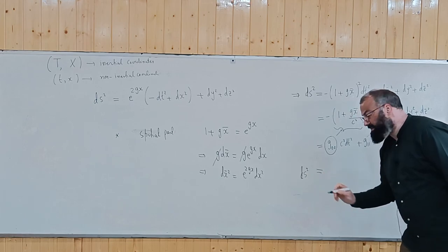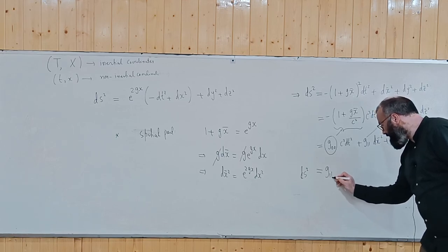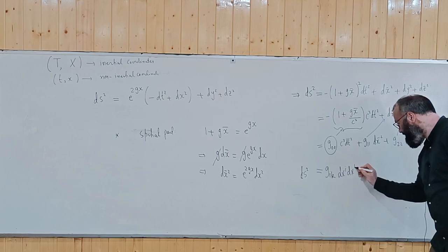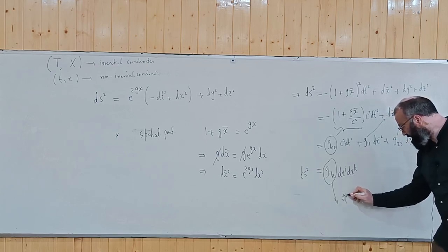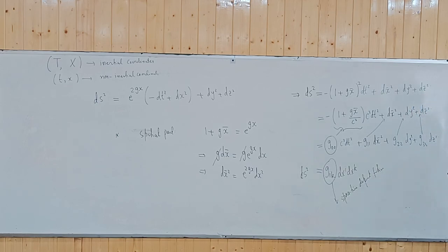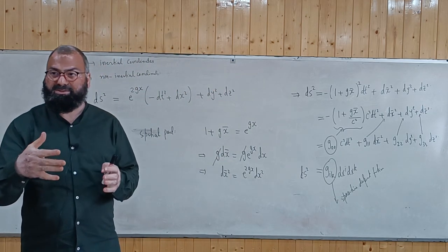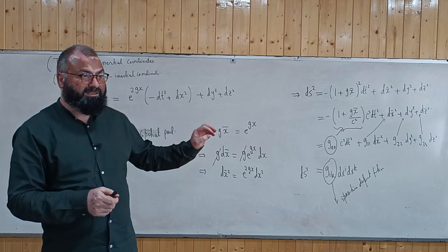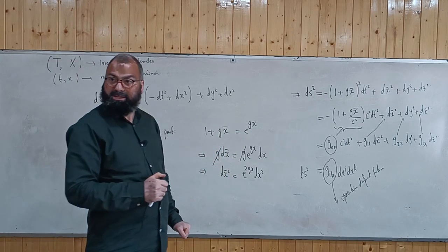Since acceleration is equivalent to gravitation, in the presence of gravitation we can write the metric as g_ik dx^i dx^k, where g_ik is in general space-time dependent. In flat space-time, or the Minkowski space, this g is simply eta, written as diag(-1, 1, 1, 1), a constant matrix. Here, the metric is a coordinate-dependent function. This means gravity affects the geometry — there is an interplay between gravitation and geometry. Geometry gives rise to gravitation, and gravitation curves the space-time.